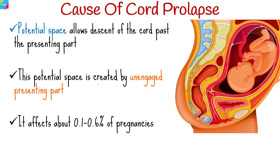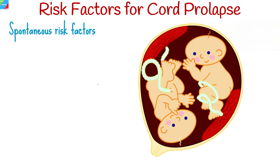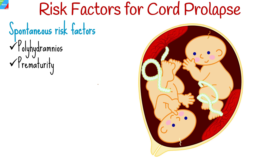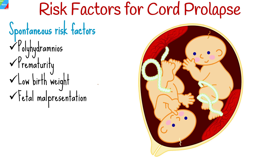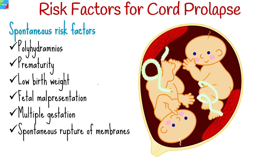Umbilical cord prolapse affects about 0.1 to 0.6% of pregnancies. The two major categories of risk factors are spontaneous and iatrogenic. Spontaneous risk factors include polyhydramnios, prematurity, low birth weight, fetal malpresentation, multiple gestation, and spontaneous rupture of membranes.